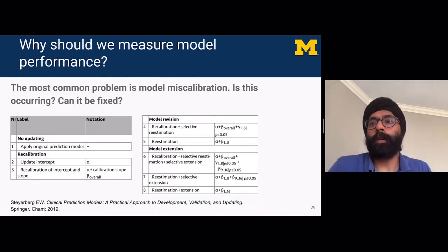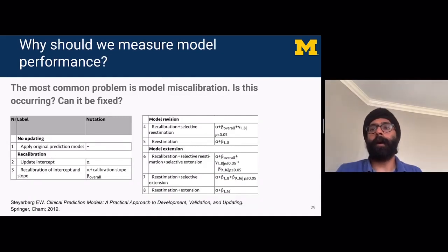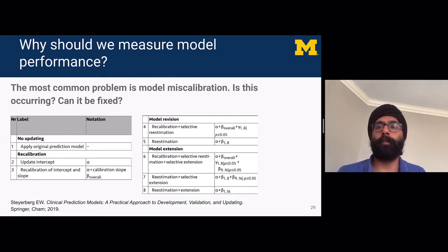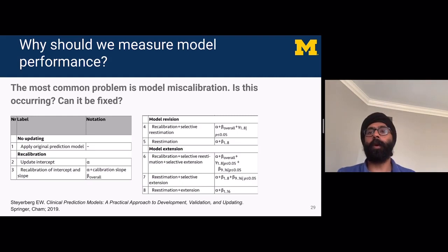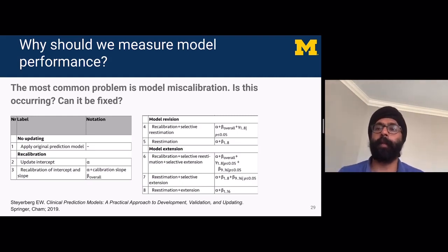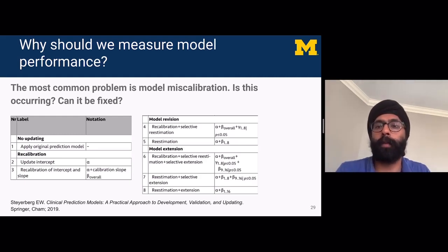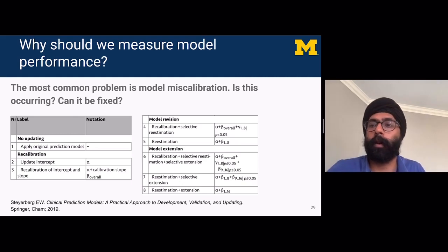One of the most common problems with models is model miscalibration. If we don't measure model performance, we won't know if it's occurring, and if we don't know, we can't fix it. This is an example of some of the different ways that models can be recalibrated, according to the textbook Clinical Prediction Models by Dr. Steyerberg.